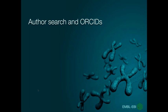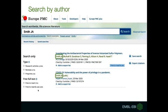Another common search is for the works of a particular author. In this section, we will cover searching for authors and ORCIDs as a unique identifier for authors. Here's an example of a quick search for an author — Europe PMC automatically recognizes this as an author search and restricts the results to those where the name appears in the author list.